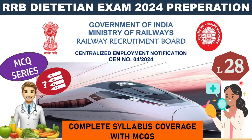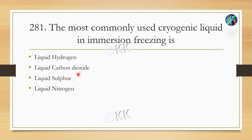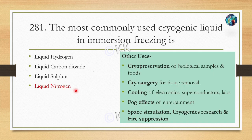Hello everyone, welcome to part 28 of our MCQ discussion series. Let's start with today's first question: the most commonly used cryogenic liquid in immersion freezing is — option A liquid hydrogen, option B liquid carbon dioxide, option C liquid sulfur, option D liquid nitrogen. The correct option is option D, liquid nitrogen.